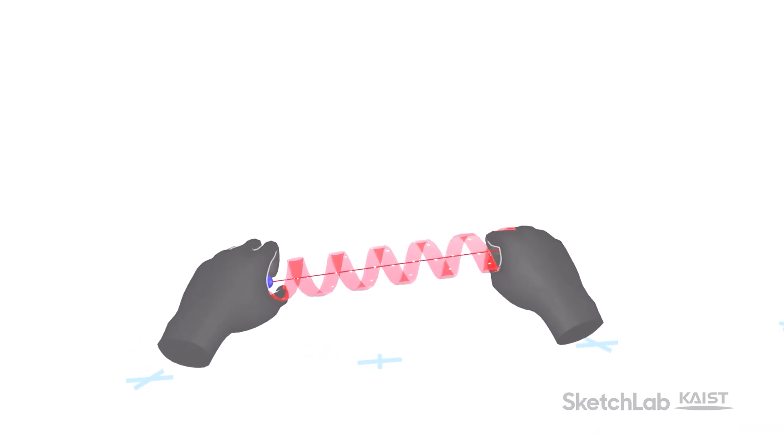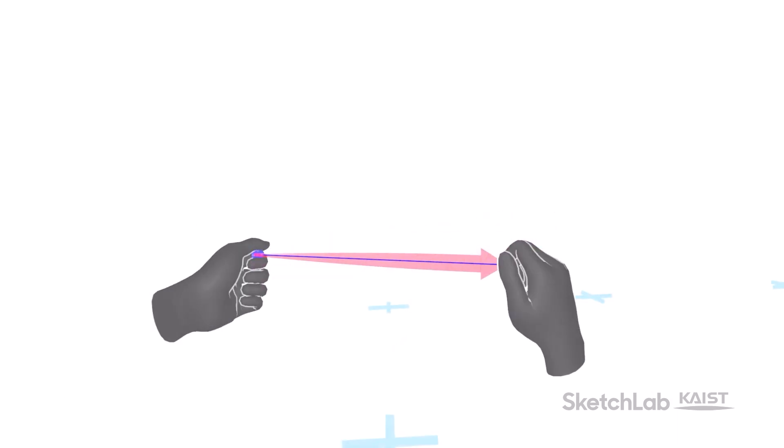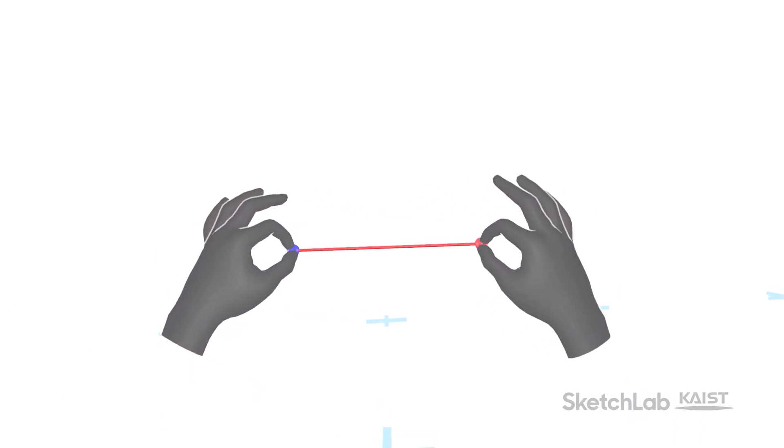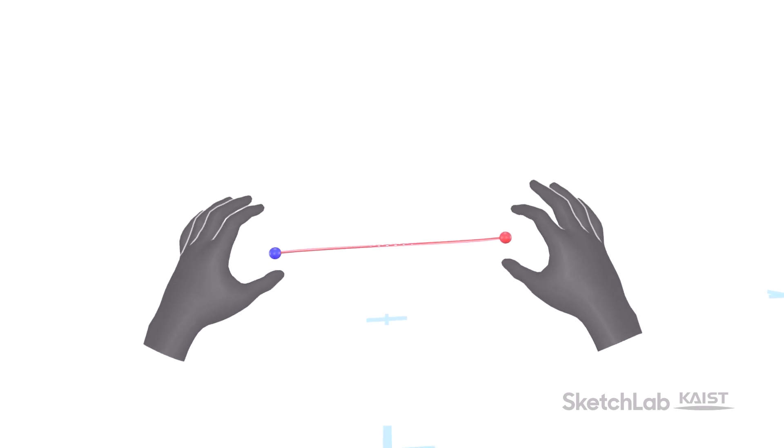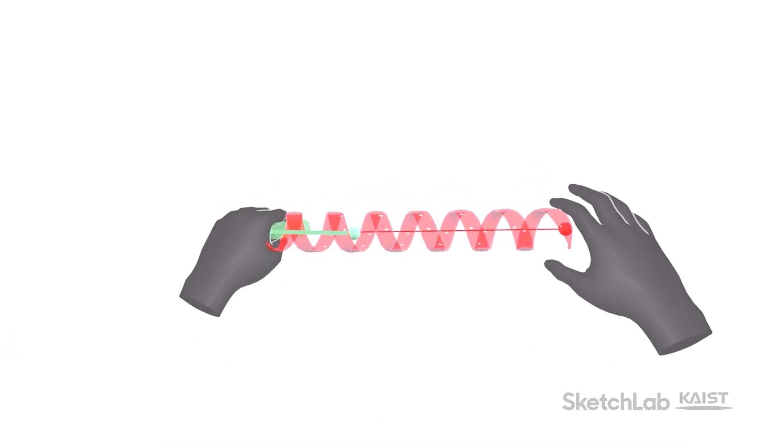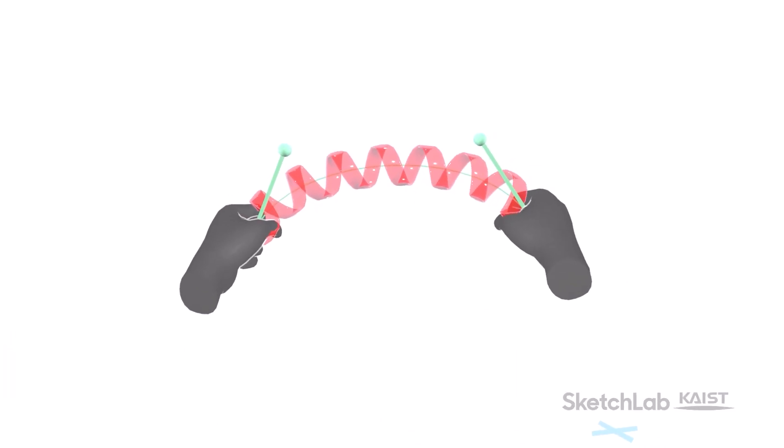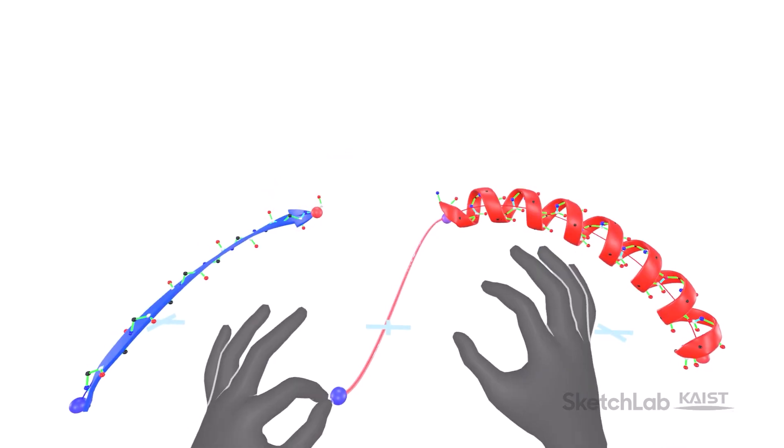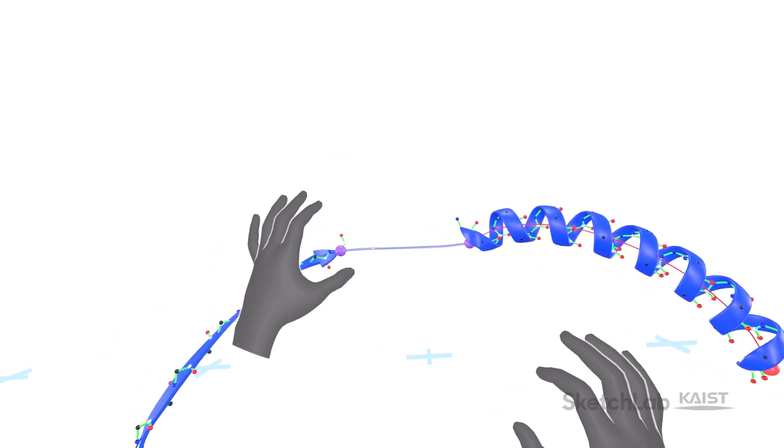Our system supports the creation of three types of secondary structures: alpha helix, beta strand, and loop through hand gestures that mimic holding physical objects. Our system also automatically converts the 3D curved networks into physically and chemically valid 3D structures of proteins to the best approximation.